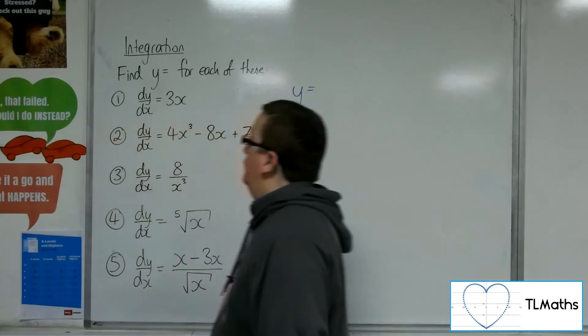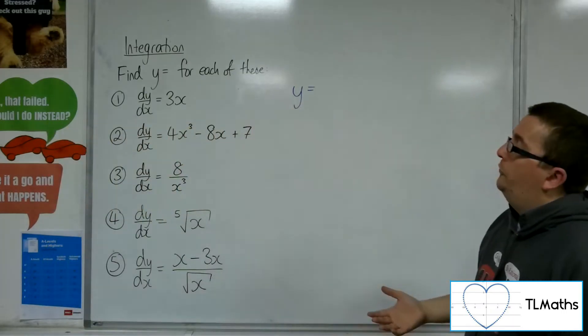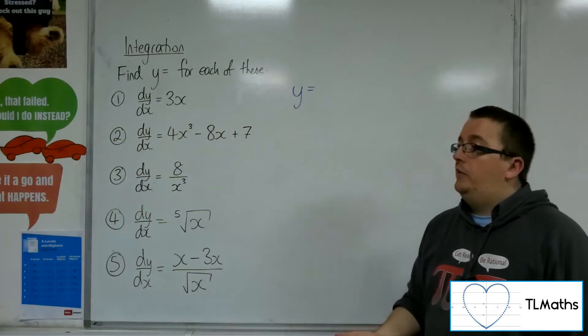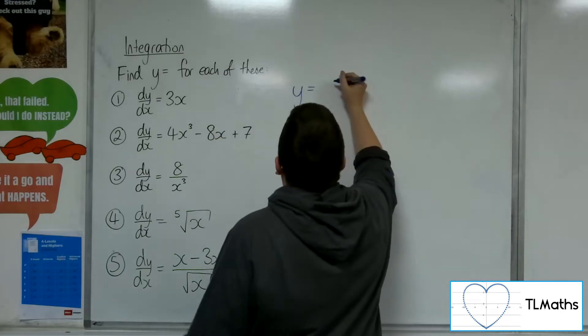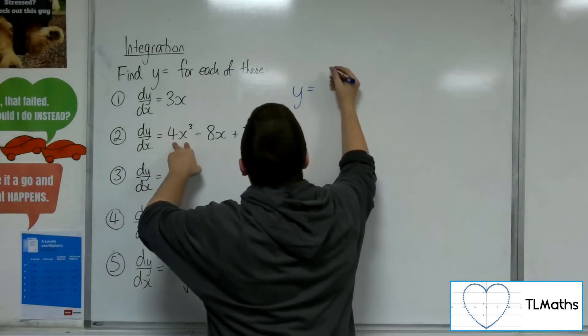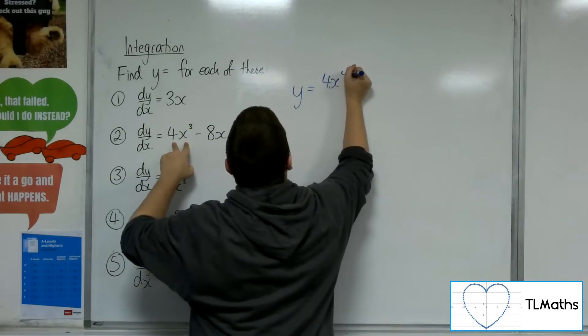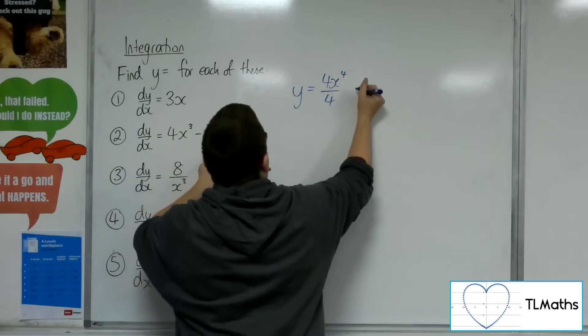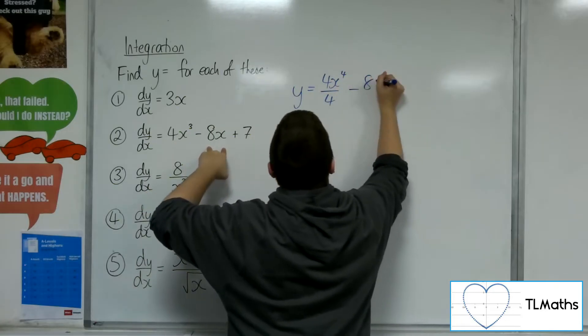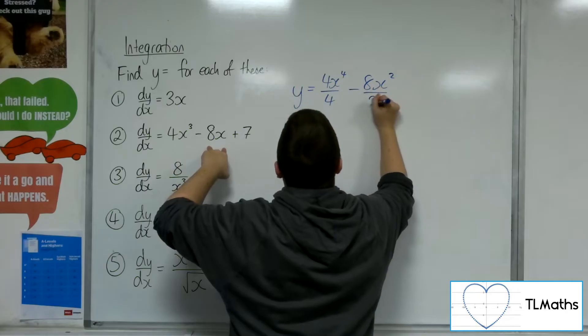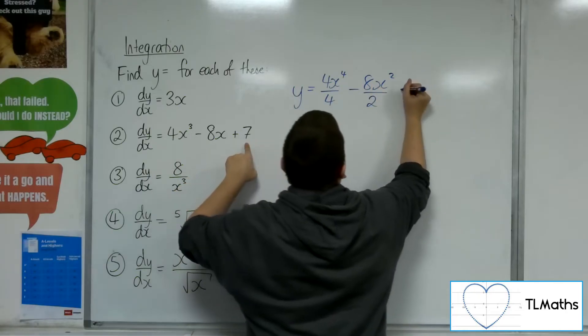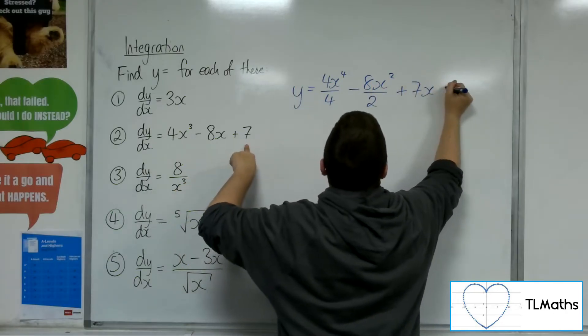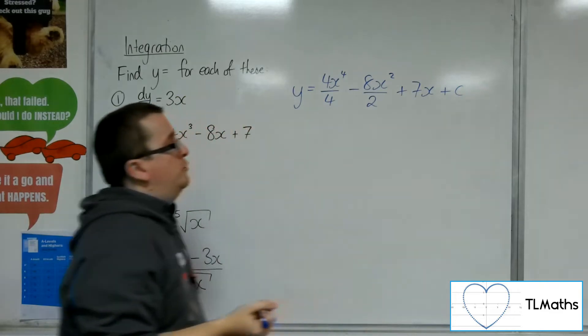Now, number 2, we've got dy by dx equals 4x cubed minus 8x plus 7. So, we're going to integrate the 4x cubed. So, add 1 to the power and divide by the new power. Then the minus 8x, so add 1 to the power, divide by the new power. And the 7 integrates to 7x, and then I add on that constant of integration, c.